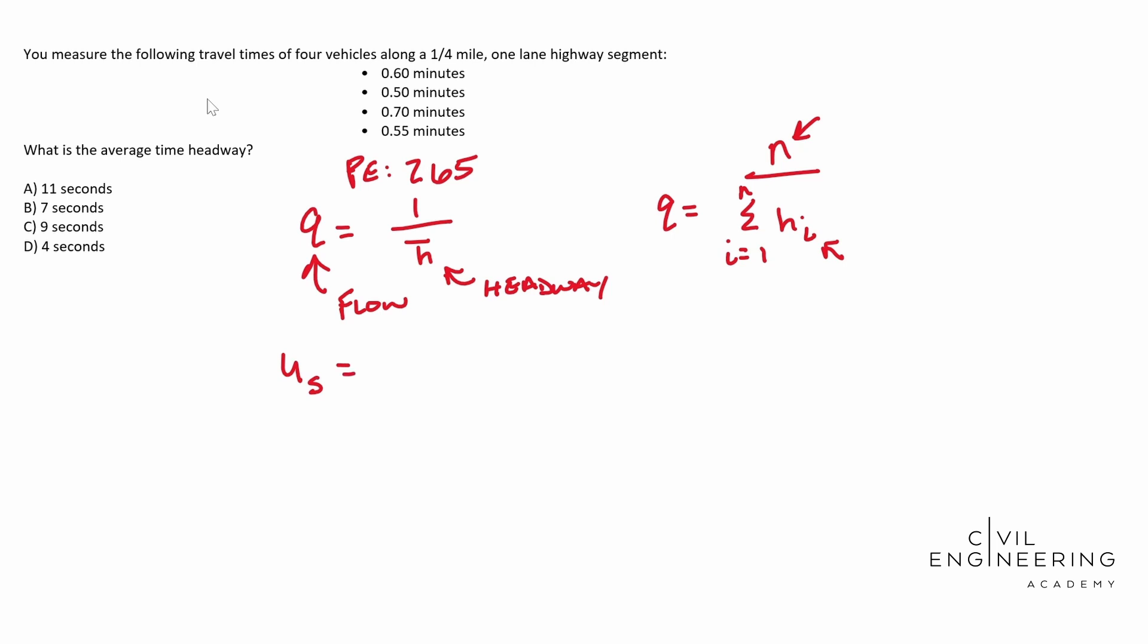Well that other formula is going to look a little bit like this. U sub S is equal to Q over K. And at first glance you may think we have a ton of unknowns. This isn't going to apply to us.